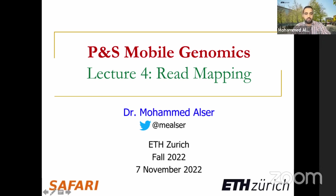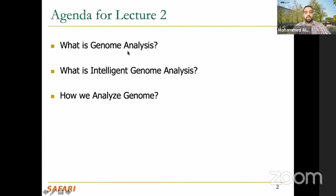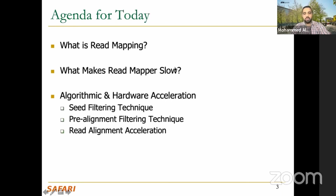In the previous lecture, we went through three points: what is genome analysis, what is intelligent genome analysis, and how we analyze genomes. We agreed that sequencing machines give us sub-sequences of our DNA — fragments. Because of this limitation of the sequencing machine, we have the readmapping step. If that limitation didn't exist, we probably wouldn't need it. Today we'll explain what readmapping is, what makes readmappers slow, and we'll cover algorithmic and hardware acceleration techniques over the next five to six lectures on this topic.